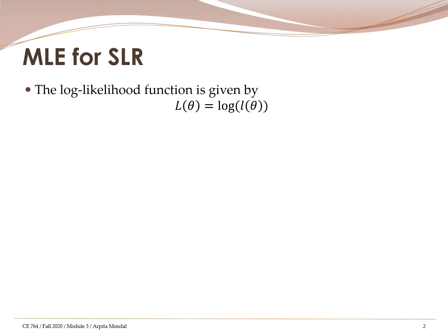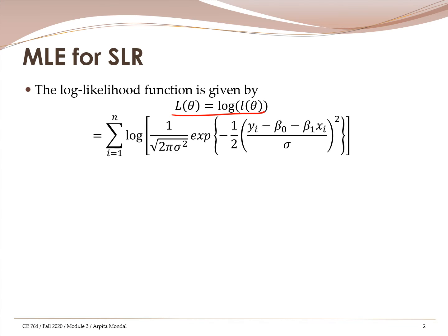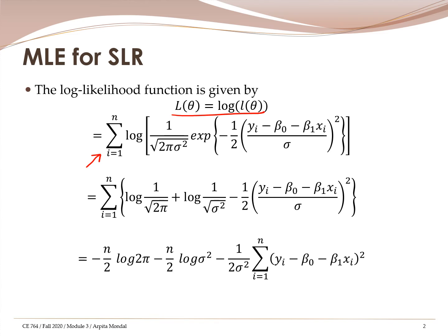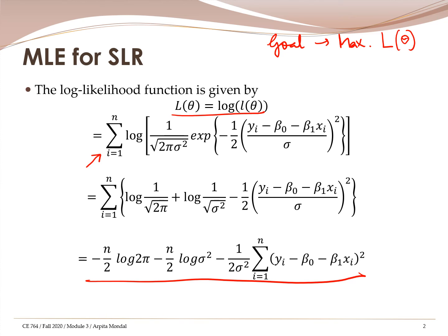So this is my likelihood function. Once we have the likelihood function, as discussed in module 2, it is convenient to work with the logarithm of that function. So instead of using the likelihood function little L of theta, we will be using the logarithm, capital L of theta. When you plug in the expression for little L of theta, note that the product has changed to a summation — this is the advantage of using the log function. When we expand this summation term, we end up having three main terms. Our goal is to maximize the likelihood function, and because log is also monotonic, maximizing capital L of theta gives the same output as maximizing little L of theta.